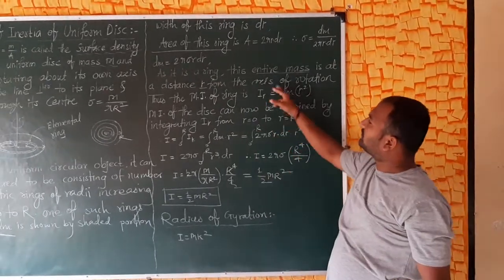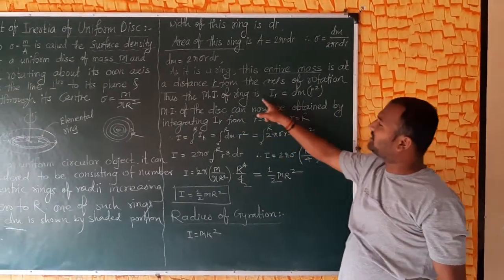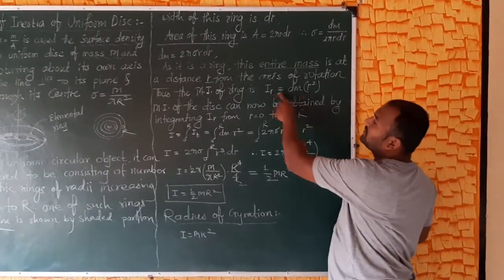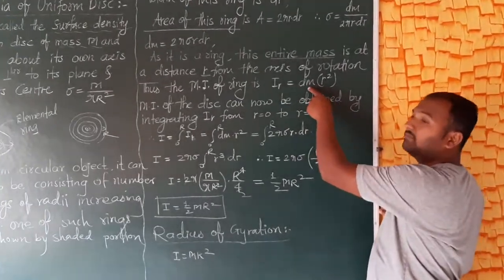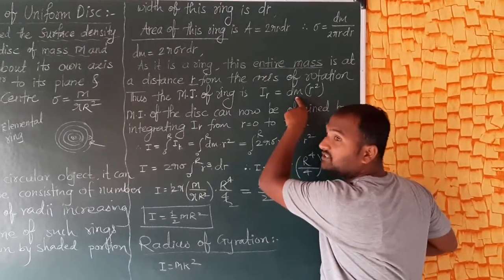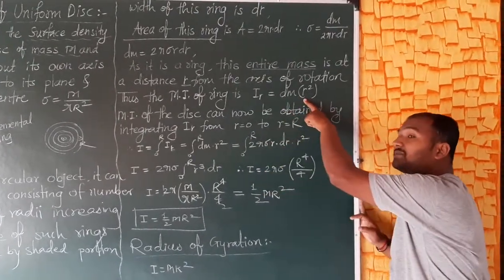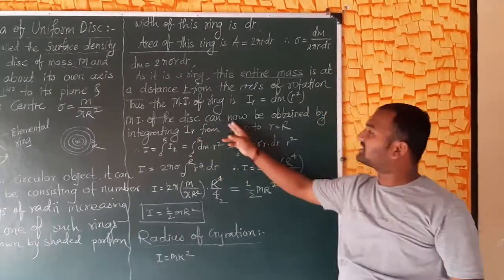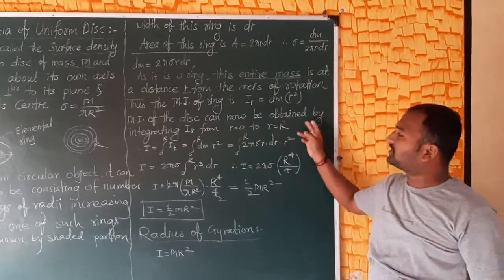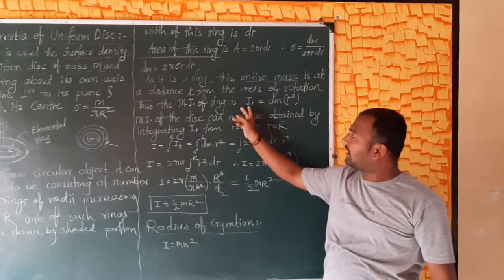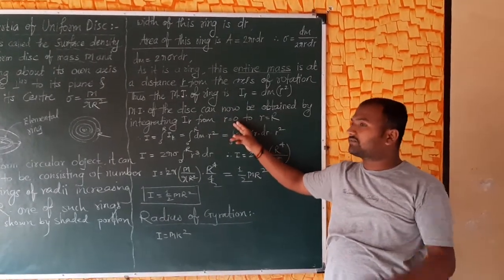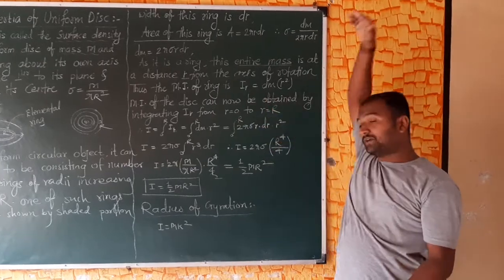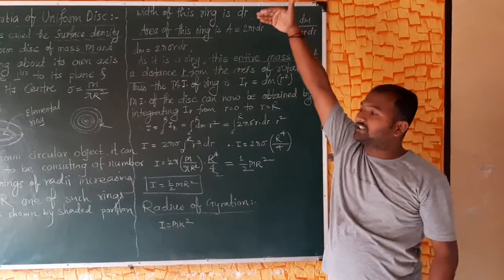So therefore, the moment of inertia of the ring is: I equals m r squared, where mass is dm and r squared is the square of the perpendicular distance. The moment of inertia of the disc can now be obtained by integrating IR from r equals 0 to r equals capital R, the outer radius.